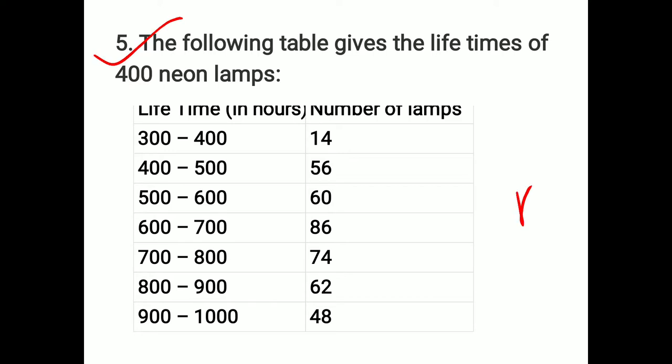You have a table given with lifetime in hours and number of lamps: 300 to 400 hours has 14 lamps, 400 to 500 has 56, 500 to 600 has 60, 600 to 700 has 86, 700 to 800 has 74, 800 to 900 has 62, and 900 to 1000 has 48 lamps.